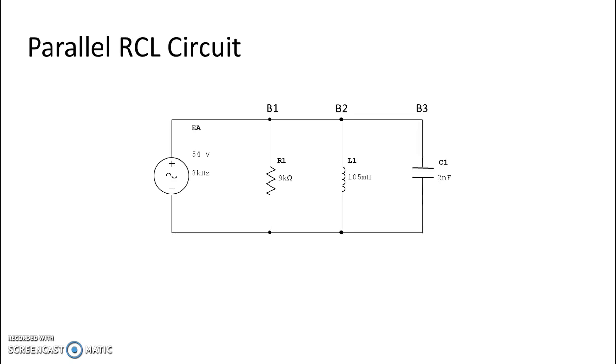All right, here we are back in our parallel RCL circuit and this time we are going to calculate resonant frequency. So the resonant frequency for this formula is going to be 10.99 kHz.